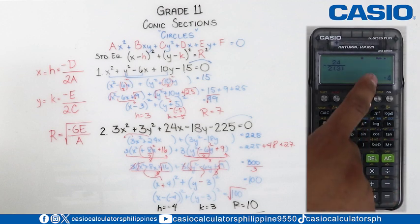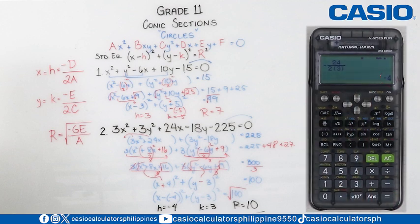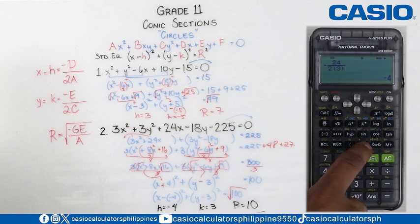So, then let's press equal sign. We get negative 4 for the value of h, which is the same as what we got in our long method. Then, let's store this to our variable x.